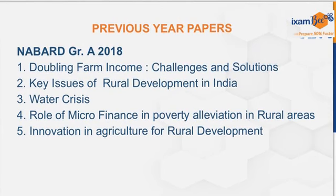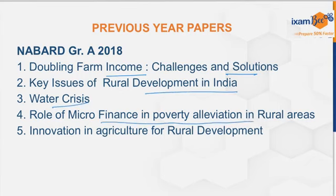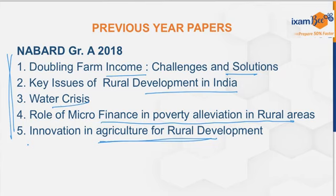In 2018, the essay topics were: doubling farm income — challenges and solutions; key issues of rural development in India; water crisis; role of microfinance in poverty alleviation in rural areas; and innovation in agriculture for rural development. You must have noticed that in 2018, most topics were related to NABARD — agri, farm income, rural development, water crisis, microfinance, and innovation in agriculture.